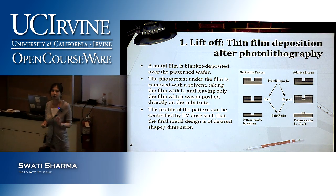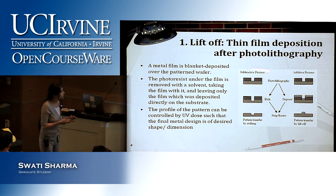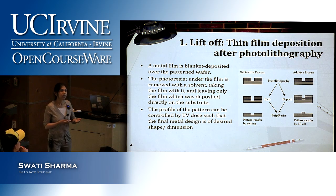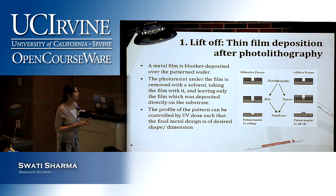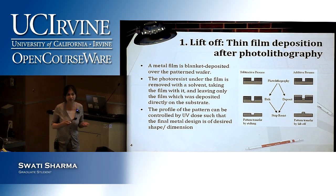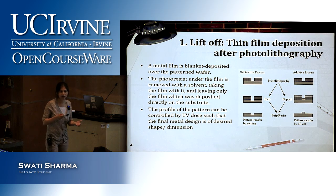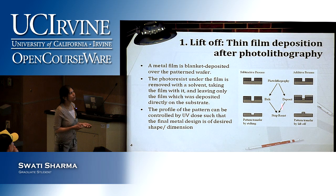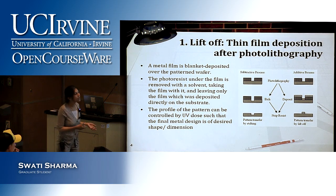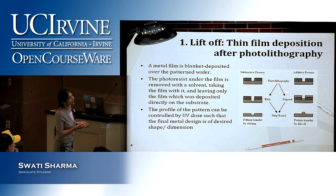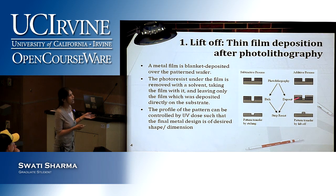Lift-off is a very important process in the semiconductor industry as well as MEMS. Many things require a metal — for example, for making electrodes you need a metal patterned onto your silicon wafer. It's really difficult and expensive to draw nano and micro lines using a metal directly. So what we can do is just do photolithography: deposit a film of metal and then remove the photoresist. The metal deposited on top of the photoresist will be washed away with it.